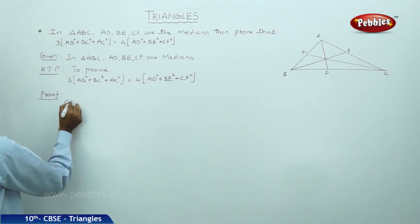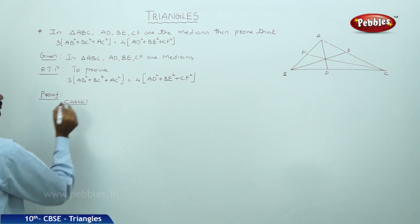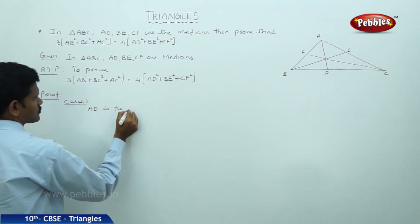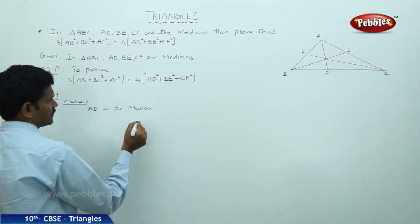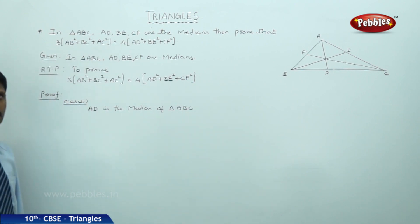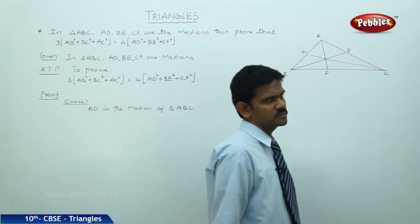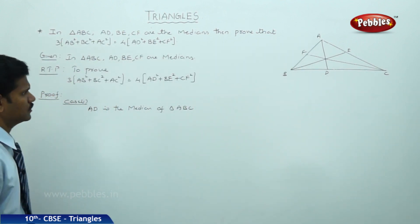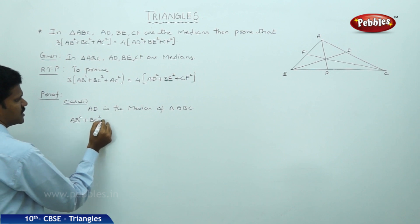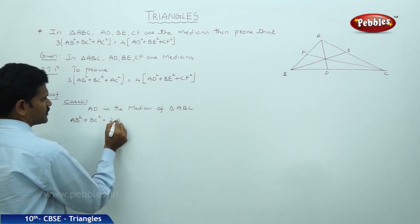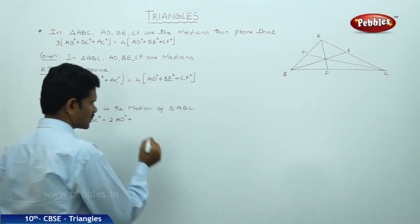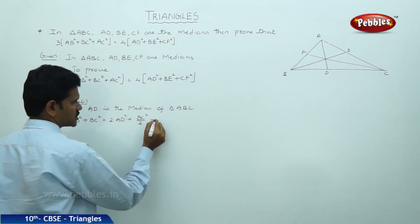Proof. Case 1: AD is a median. If AD is a median, then from the previous theorem, AB² + BC² = 2·AD² + BC²/2. This is equation 1.